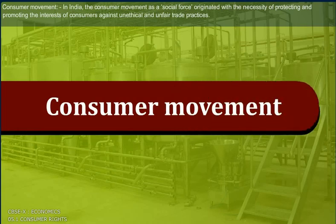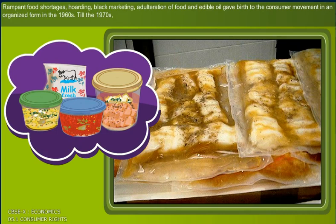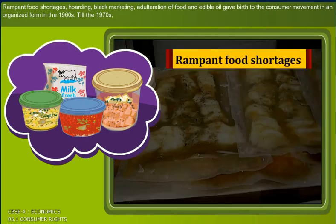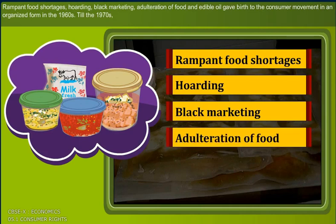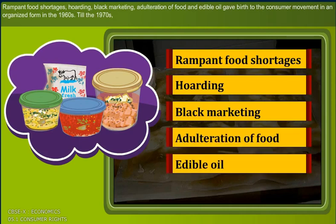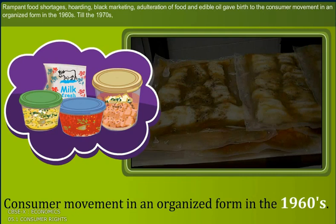Consumer Movement. In India, the consumer movement as a social force originated with the necessity of protecting and promoting the interests of consumers against unethical and unfair trade practices. Rampant food shortages, hoarding, black marketing, adulteration of food and edible oil gave birth to the consumer movement in an organized form in the 1960s.